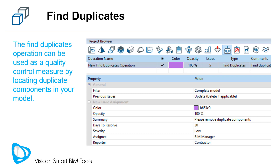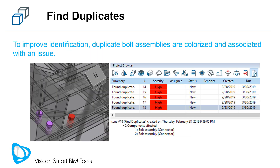The Find Duplicates operation can be used as a quality control measure by locating duplicate components in your model. This screen shows a list of duplicate bolts found in our industrial plant BIM example. The issues clear themselves out if the duplicate components have been deleted and the operation is rerun.